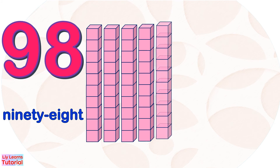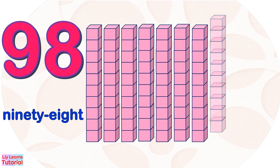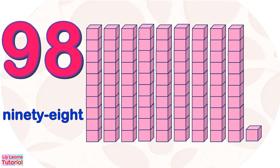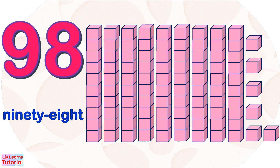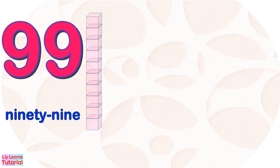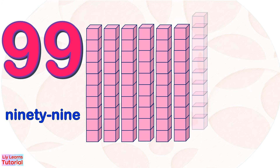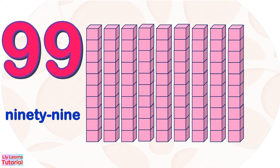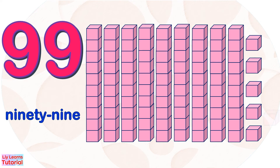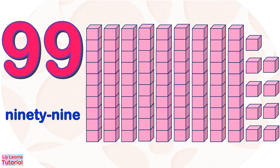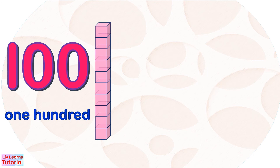Sixty, seventy, eighty, ninety, ninety-one, ninety-two, ninety-three, ninety-four, ninety-five, ninety-six, ninety-seven, ninety-eight. Ninety-nine. Ten, twenty, thirty, forty, fifty, sixty, seventy, eighty, ninety, ninety-one, ninety-two, ninety-three, ninety-four, ninety-five, ninety-six, ninety-seven, ninety-eight, ninety-nine.